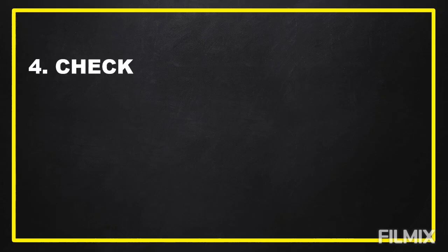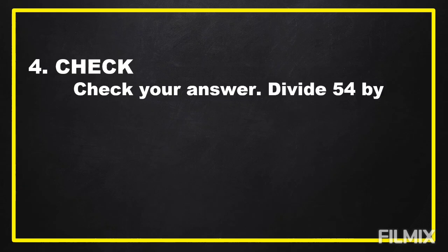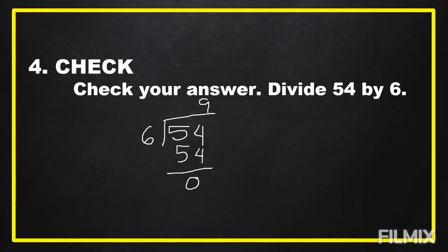After we have the answer to our problem, it is time to check or look back whether our answer is correct or not. To check our answer, we should divide 54 by 6. Let's try whether there's no remainder: 54 divided by 6 equals 9. And 9 times 6 equals 54. Then 54 minus 54 equals 0, so there's no remainder. Our answer is correct.